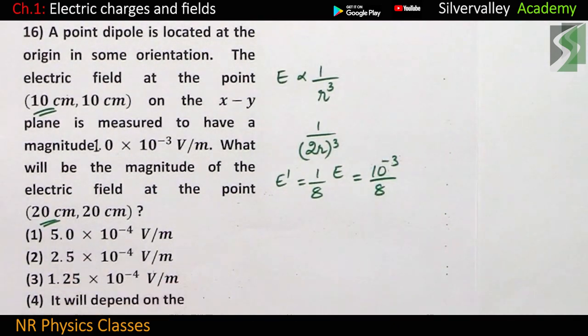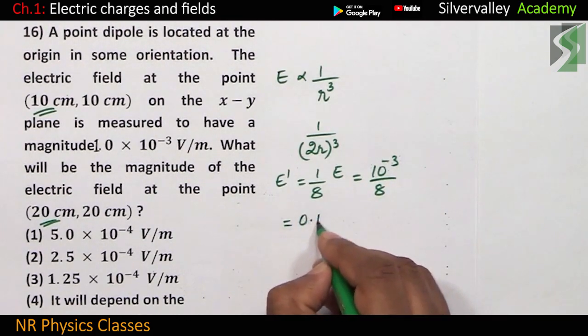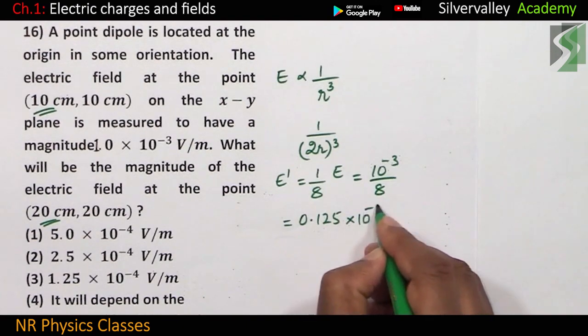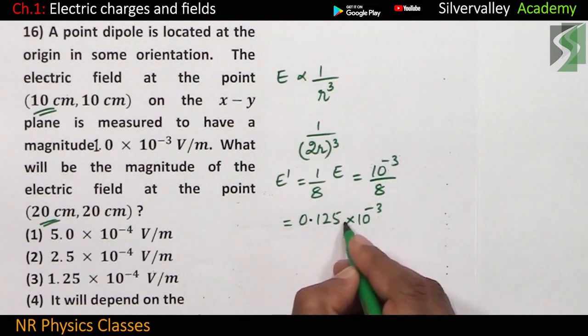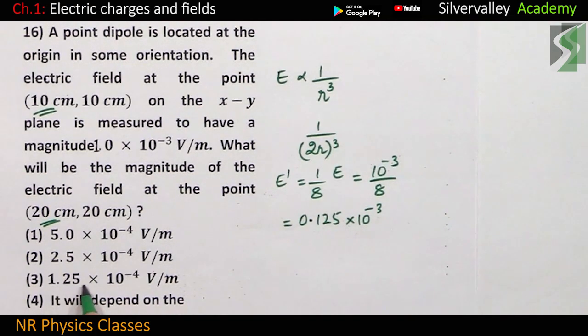10 to the power minus 3 by 8. Observe the options. 1 by 8 is 0.125, 10 to the power minus 3. So, 0.125 is here. If you rearrange, you will get 1.25.